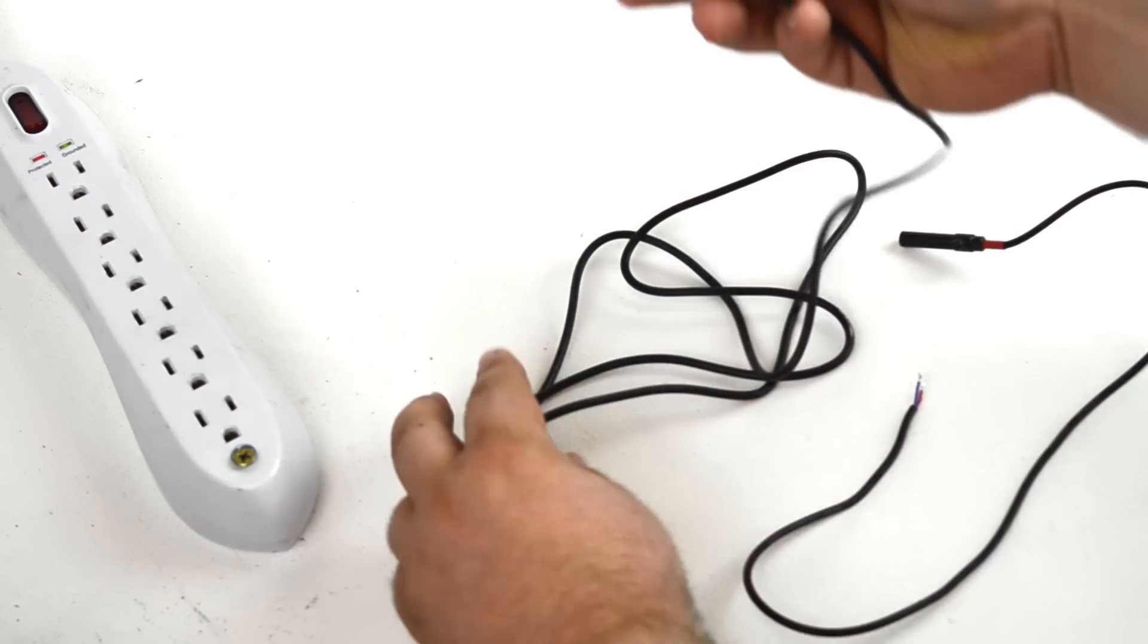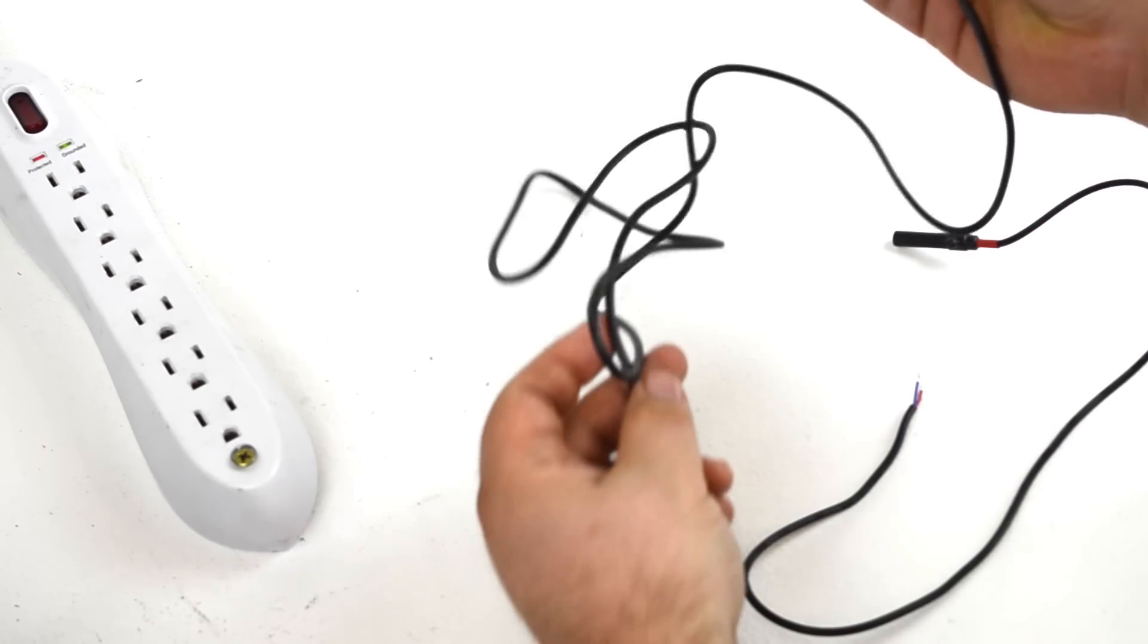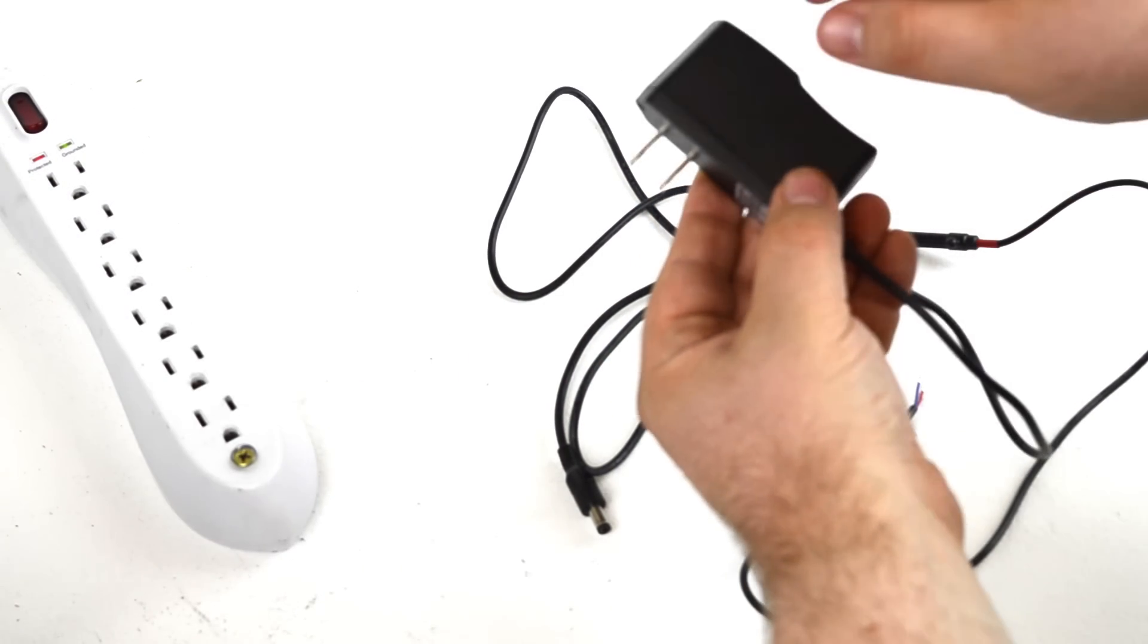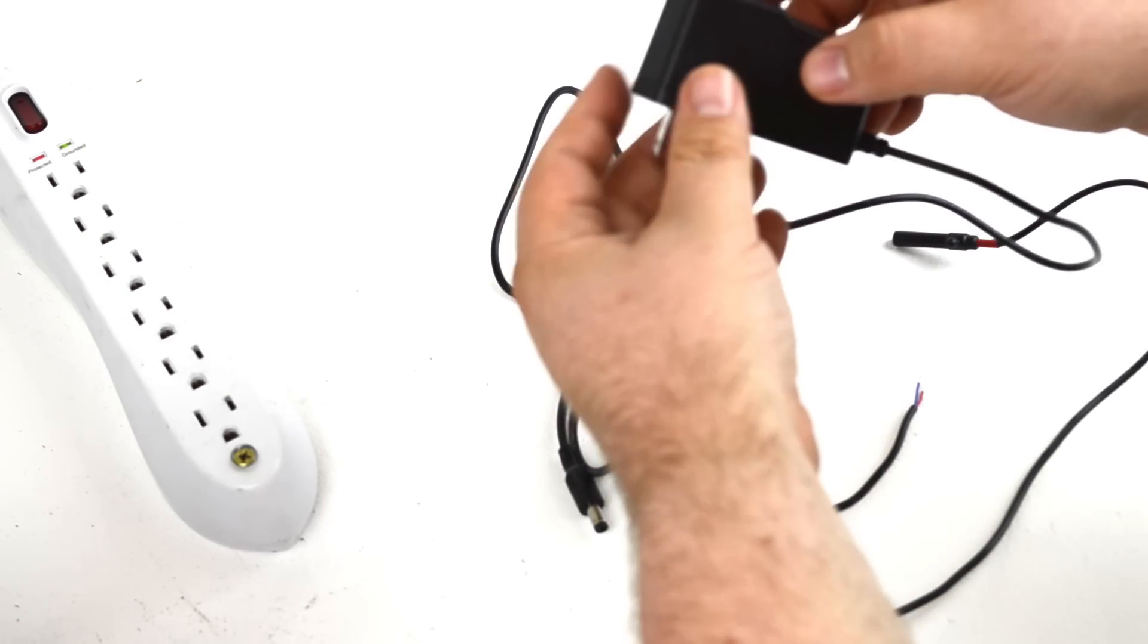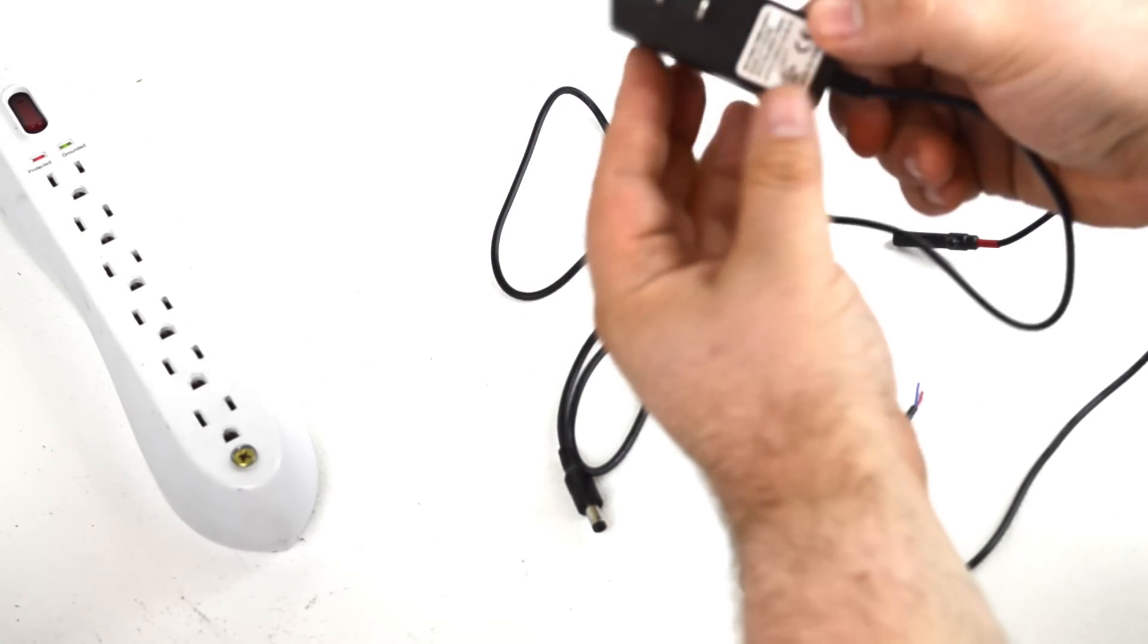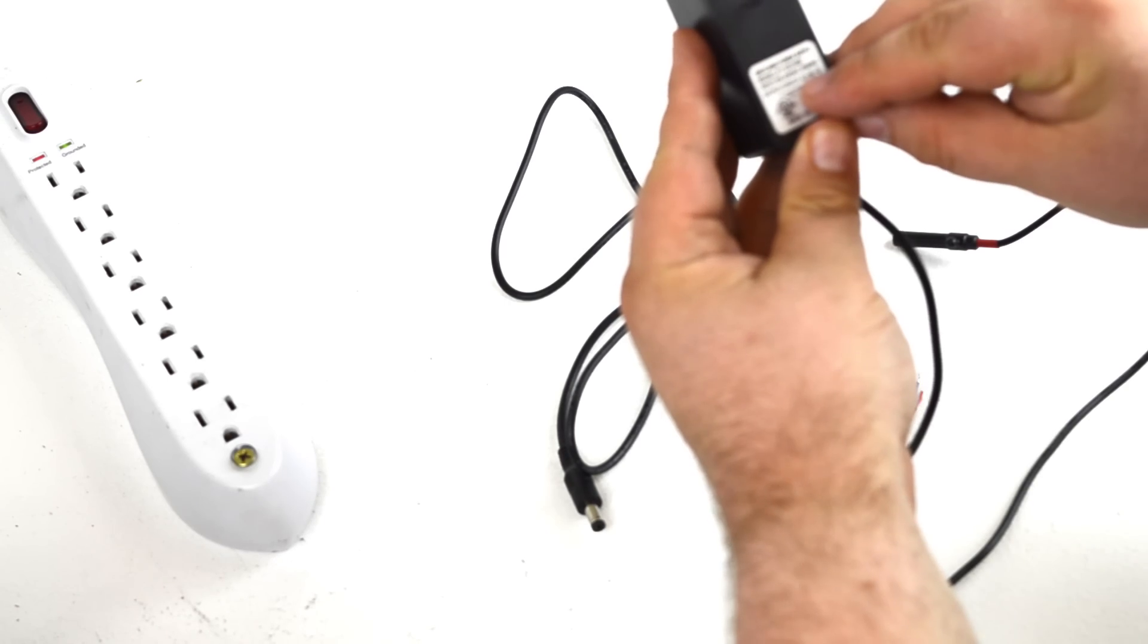That's where a power supply comes in. So the power supply contains a transformer which takes the 110 volt AC current from a household plug and reduces it to a low voltage. In this case 12 volts at 1 amp.